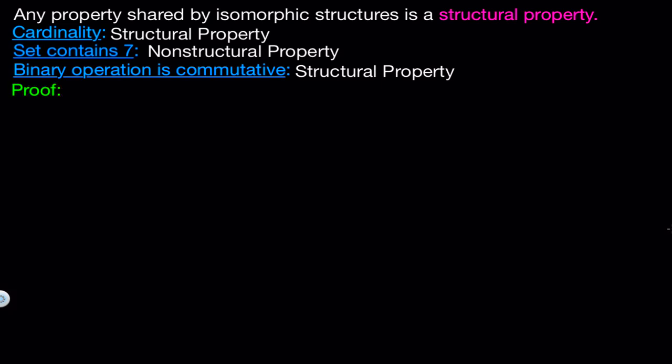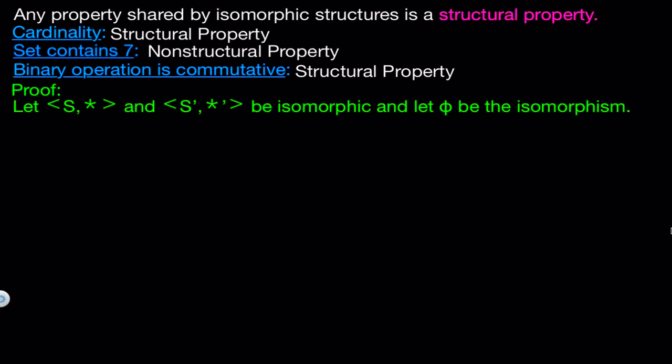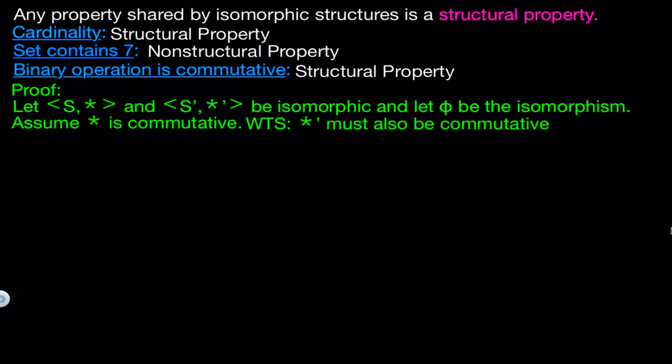To prove that commutativity is a property that must be shared between two isomorphic structures, let's start by assuming we have two isomorphic structures s and s prime, and we'll say that the function phi is the isomorphism between them. Let's also assume that the binary operation star is commutative, and then we want to show that star prime must also be commutative. If star is commutative, that means that a star b equals b star a for all a and b in s.